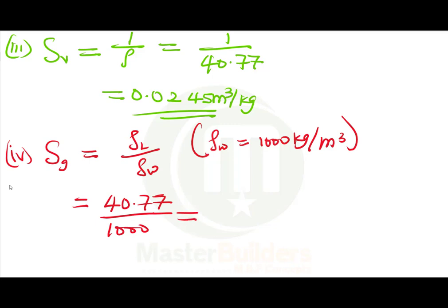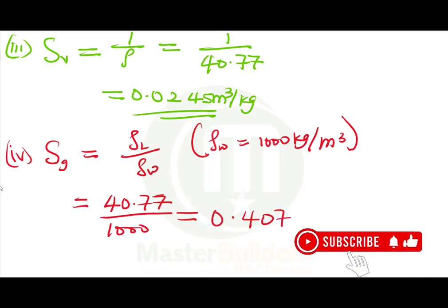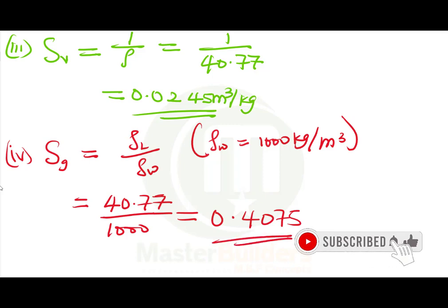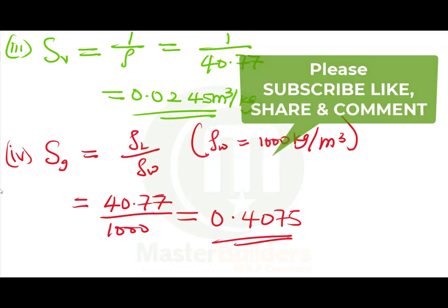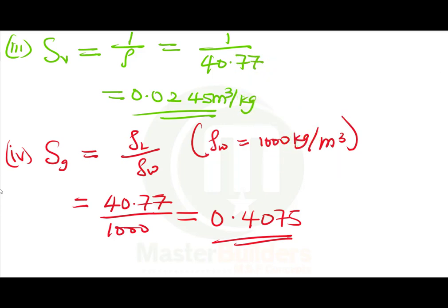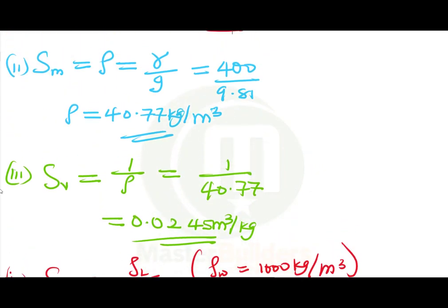The density of liquid is 40.77 as calculated, divided by the density of water which is 1,000. When we divide 40.77 by 1,000 our answer is 0.04077. Remember, specific gravity has no SI unit because it is a comparative measurement — density divided by density — so the units cancel. Another word for specific gravity is relative density.